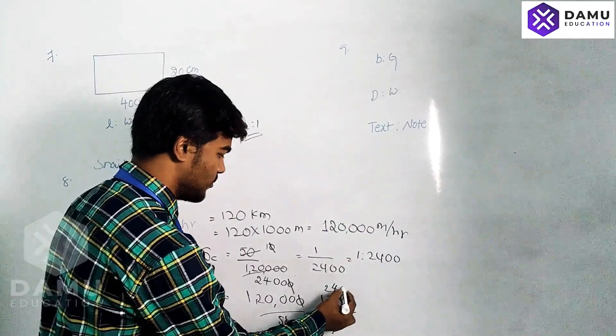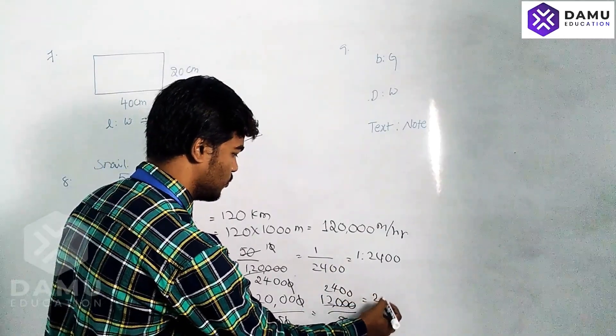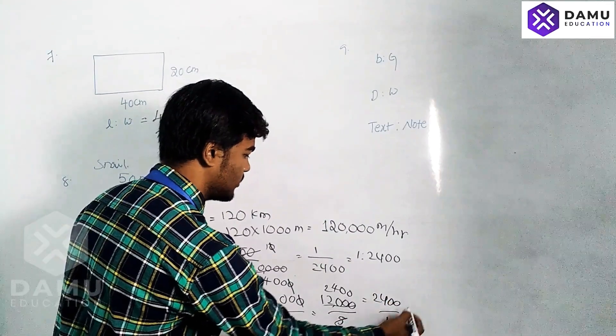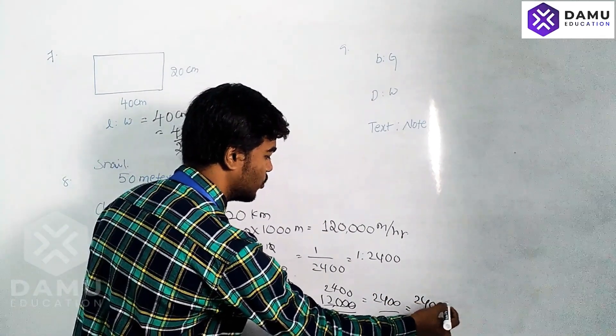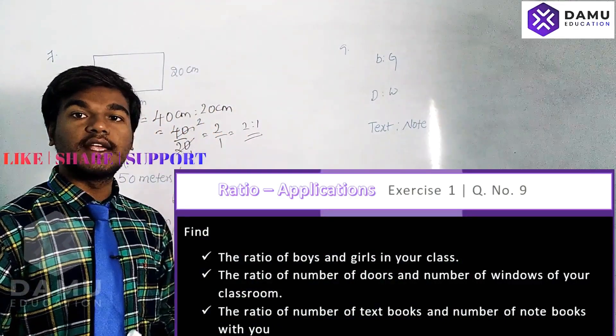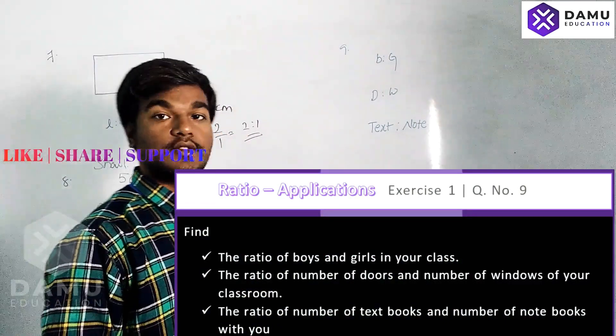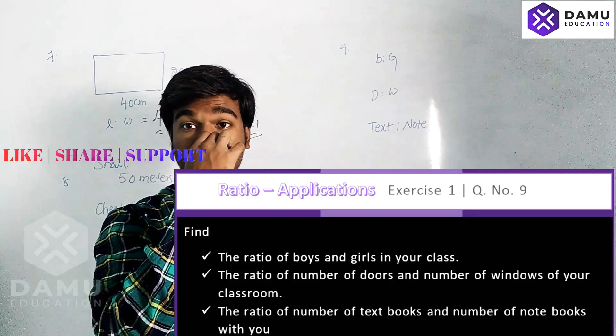Dividing by 5, 2,400 by 1. That is 2,400 is to 1. These are the ratios. Now, the last question in this exercise: what is the number of boys and number of girls ratio?